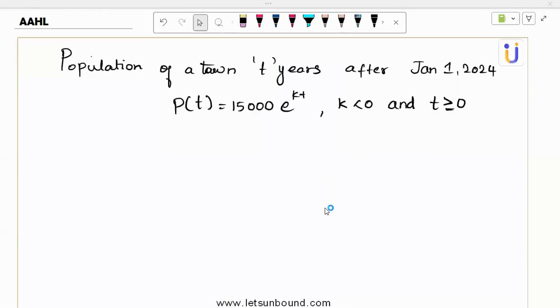Hello, everyone. Welcome back. So we are going to discuss the fourth question in our series. And this is an exponential decay function. So population of a town t years after Jan 1st, 2024 is modeled by this equation. Here k is negative, t is greater than or equal zero.